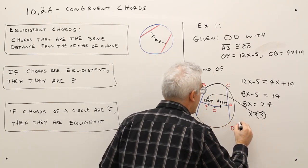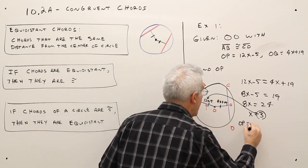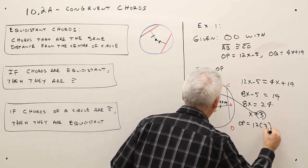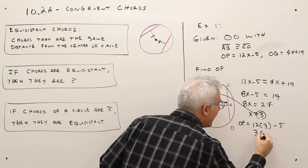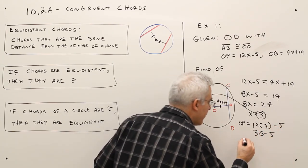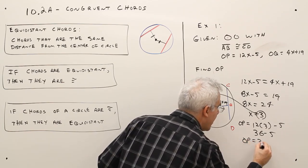and I'll put it in there. So I've got OP equals 12 times 3 minus 5, that's 36 minus 5, OP equals 31.